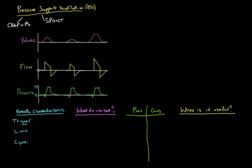We support the patient by giving them pressure. Looking at these waveforms — at the bottom we have a pressure waveform. The baseline along the white line is 5, because our baseline pressure is usually elevated — we set a PEEP level. The patient decides that they want a breath and makes an effort to breathe. That causes a drop in the pressure in the circuit — a small deflection below 5 — which tells the ventilator that the patient is trying to take a breath.